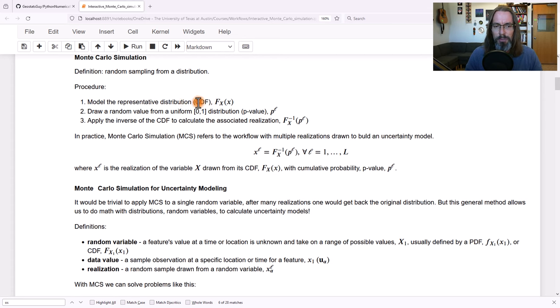The definition of Monte Carlo simulation, the very basic operation is random sampling from a distribution. Let me show you the procedure. Model the representative distribution. The CDF is defined as f(x), x. For any value of x, we can get the cumulative probability. Now what we do is we can draw a random value uniformly distributed 0, 1. This is a cumulative probability value. We can also call it a p value. And you go ahead and you apply the inverse to the CDF to calculate the associated realization. We do that and we can draw a value. We're just going to draw random values. I could grab my cowboy hat off my shelf there and just put a bunch of labeled piece of paper in there and draw randomly from the cowboy hat. That's the same thing. We're just random sampling from a distribution.